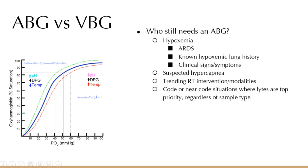In code and near-code situations, if you're suspecting hyperkalemia — you're seeing peaked T waves, widening QRS, sinusoidal pattern — you want to know the potassium right away. We can do it with an ABG. Or if lab is already drawing blood, you can call the RT and we can run a VBG off that blood sample and get electrolytes including lactate, all without subjecting the patient to an extra stick.